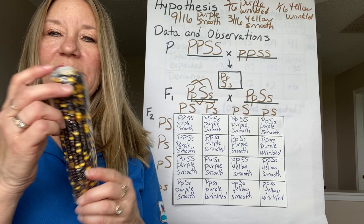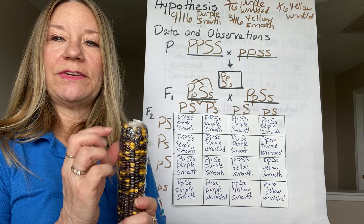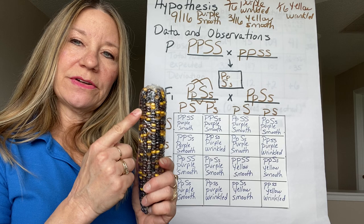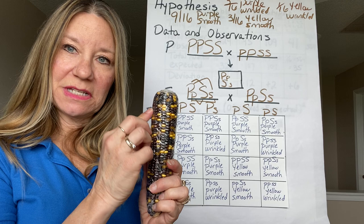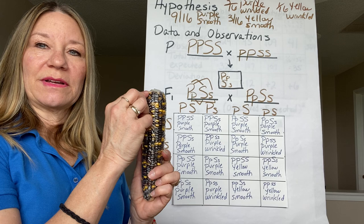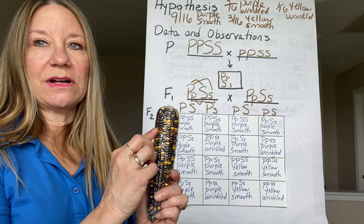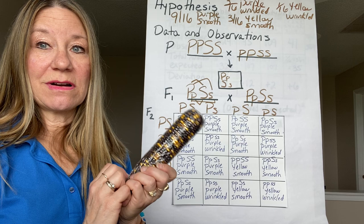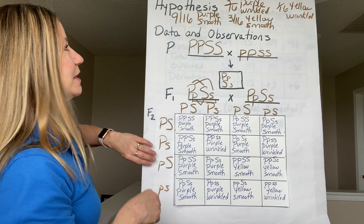The next trick is to count all of these corn kernels — you can see there's quite a few. Ideally, if you were doing this in class, you would make a mark on one row, count all of the kernels that are purple and smooth, record it, count all the kernels that were purple and wrinkled, record it, count all the kernels that are yellow and smooth, and finally count all of the kernels that are yellow and wrinkled, and record it for each row of corn. I've done that for you already.